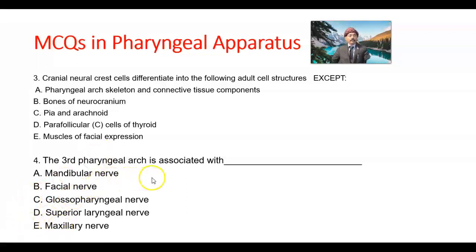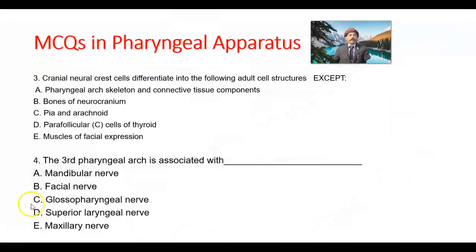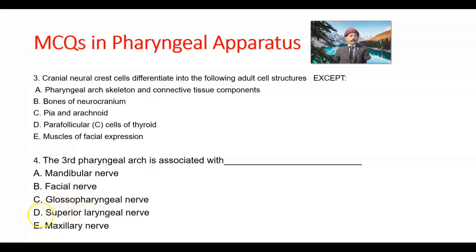Question number 4. The third pharyngeal arch is associated with which nerve? Options: mandibular nerve, facial nerve, glossopharyngeal nerve, superior laryngeal nerve, maxillary nerve. The answer is glossopharyngeal nerve. Mandibular nerve is for the first arch, facial nerve for the second arch, glossopharyngeal for the third arch, superior laryngeal nerve for the fourth arch, and maxillary nerve also for the first arch.